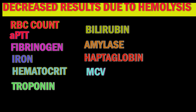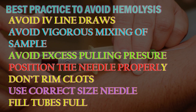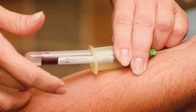Best practices to minimize hemolysis: avoid line draws; avoid vigorous mixing of the sample with anticoagulant or additives; avoid excess pulling pressure when using syringes; position the needle properly; don't rim the clots — rimming clots to remove fibrin might be tempting but this can rupture RBCs. Pre-warm skin puncture sites instead of squeezing. Fill tubes fully — the blood-to-anticoagulant ratio should be maintained, as excess anticoagulant can cause hemolysis. Also ensure sufficient drying of alcohol at the cleansing site before venipuncture to avoid alcohol residue contaminating the sample.